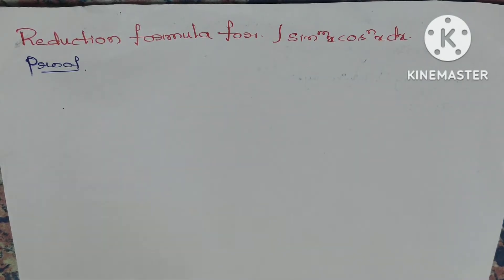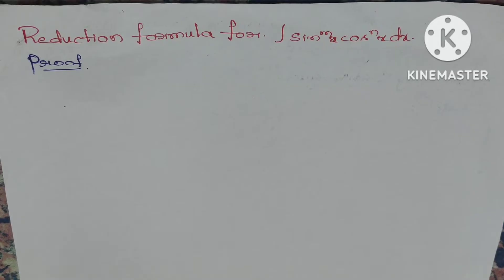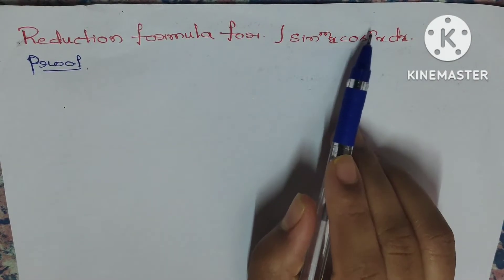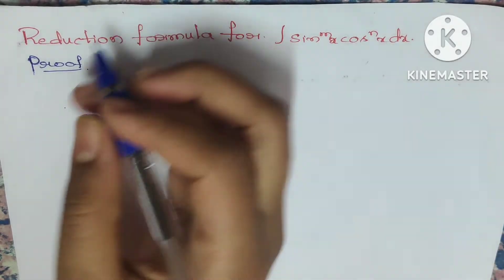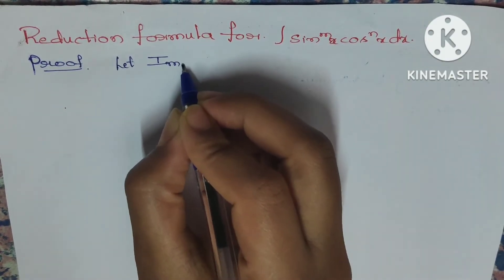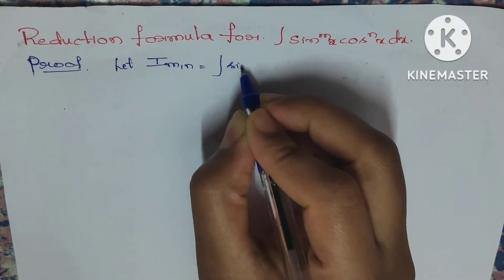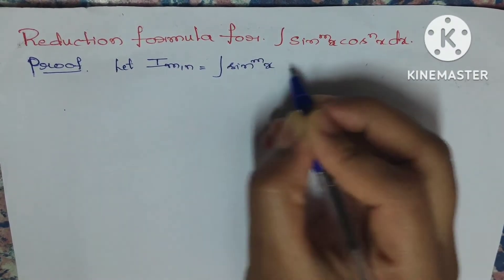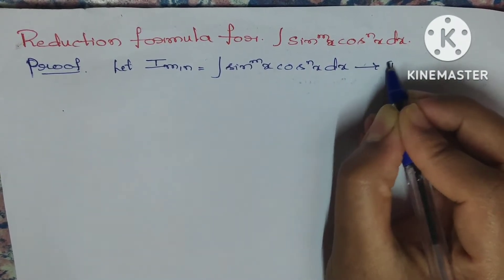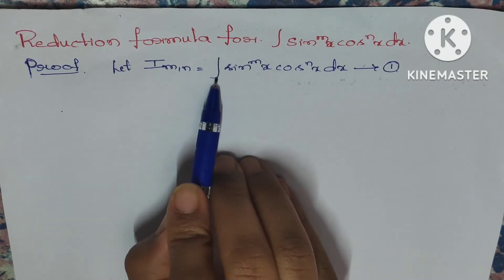Hello students, welcome back. Today in this lecture we will discuss the reduction formula for integration of sin^m(x) · cos^n(x) dx. Let us assume I(m,n) equals integration of sin^m(x) · cos^n(x) dx — call this equation 1.